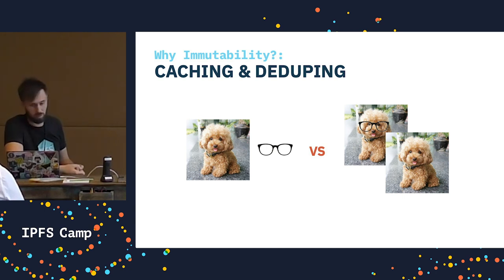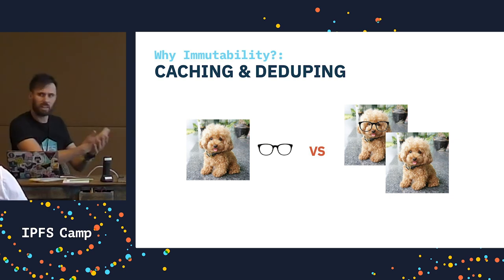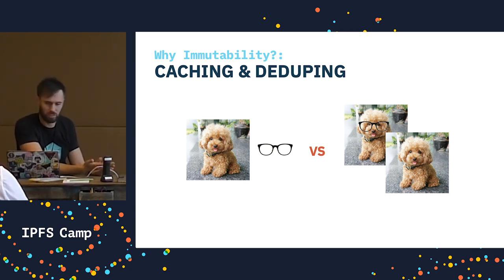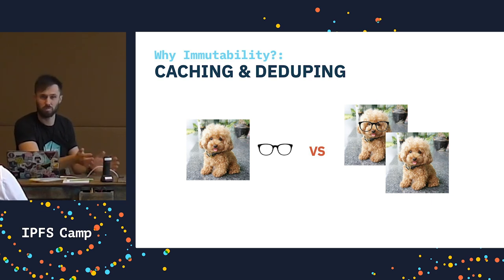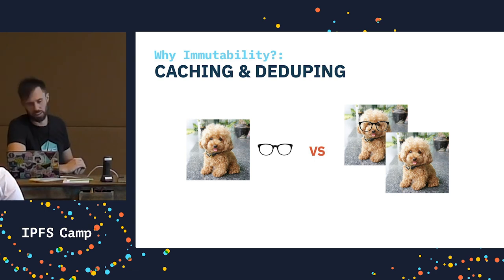Currently, if I want to store those two very similar pictures, I need to store both of them in full on my disk. And if I want to share them with someone and they want to see both pictures, I have to transfer them both in full. We'll see more about how IPFS does that magic de-duping stuff later.